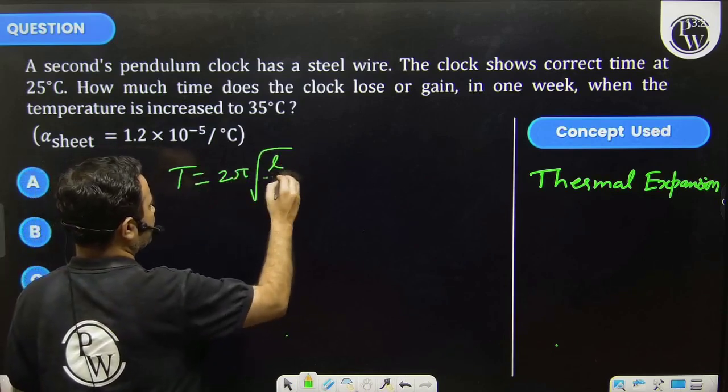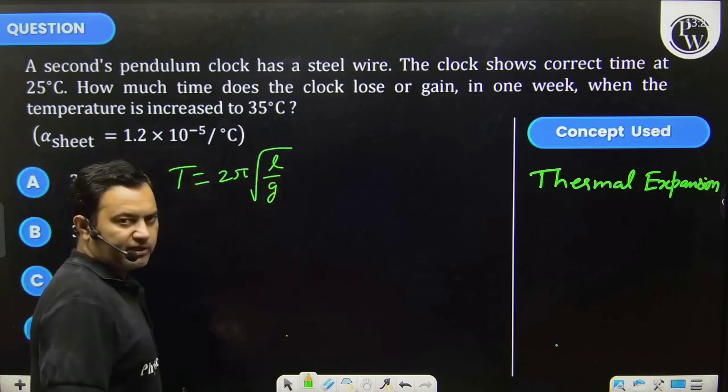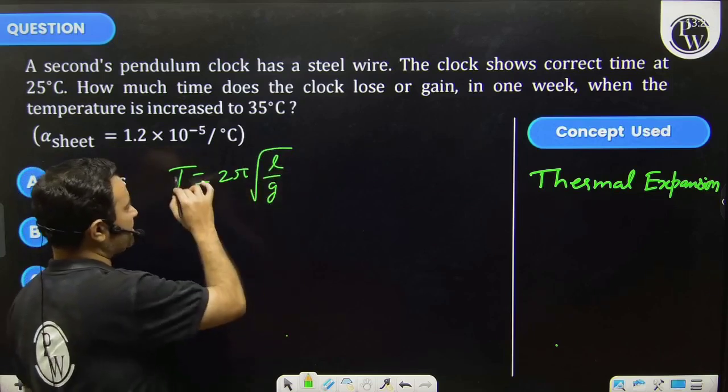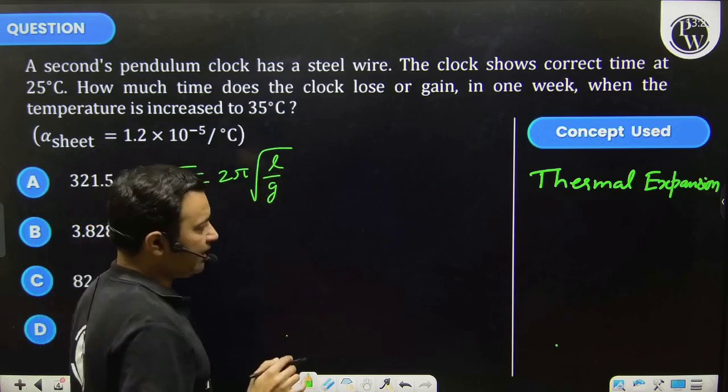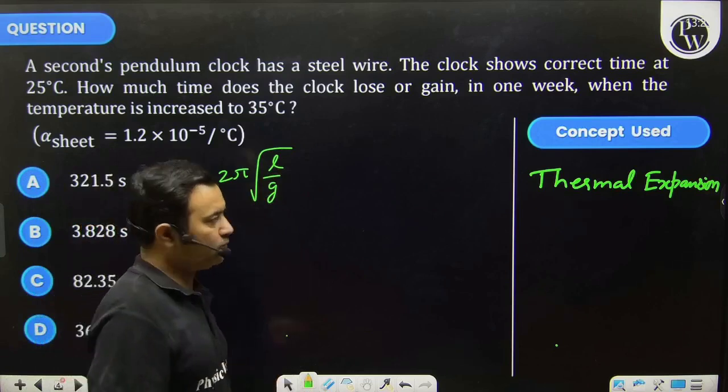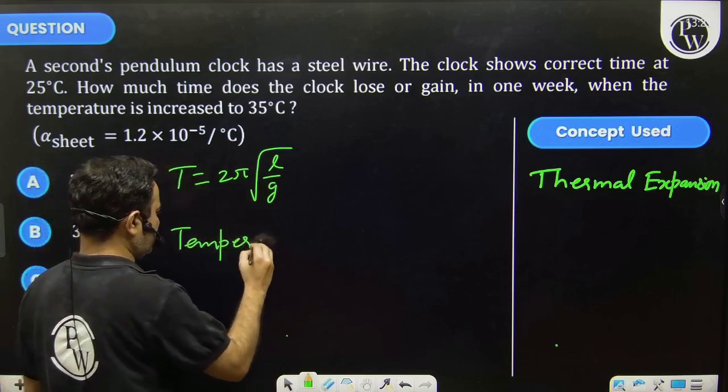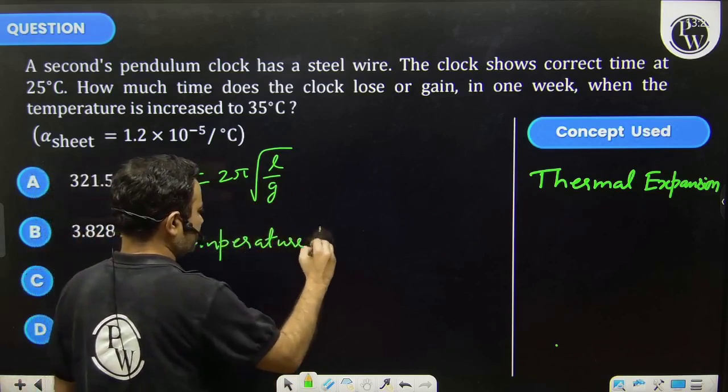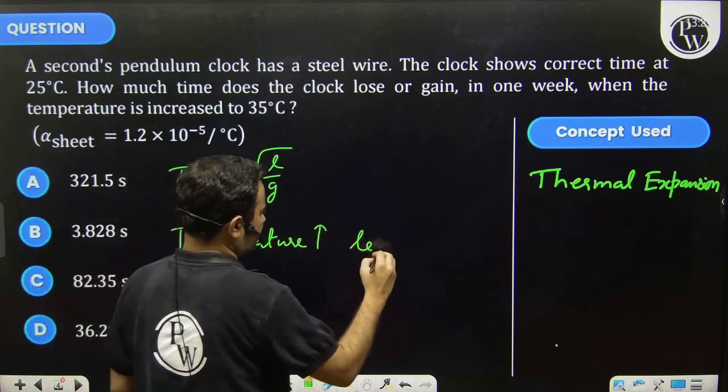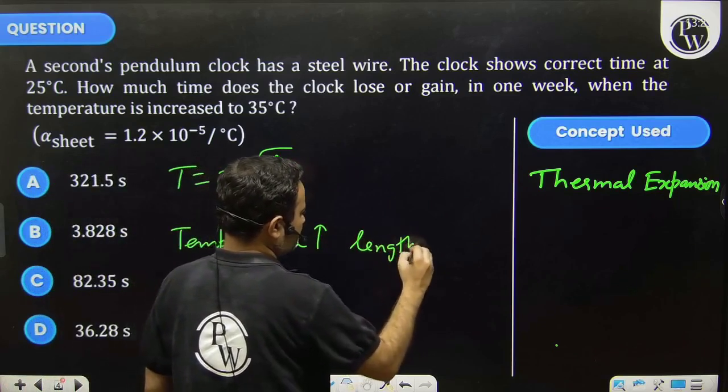Temperature increases, length increases, time period increases, and hence clock becomes slow.